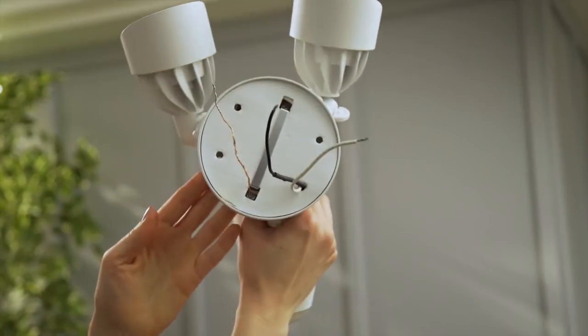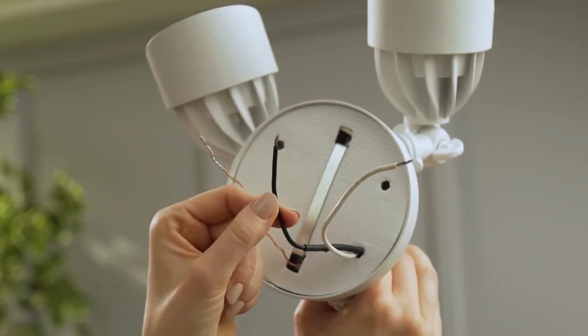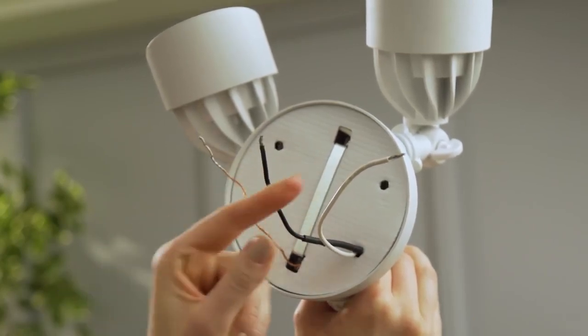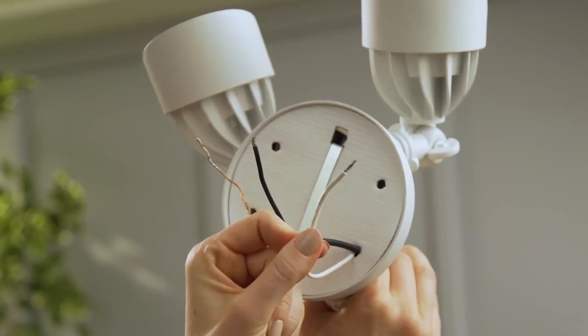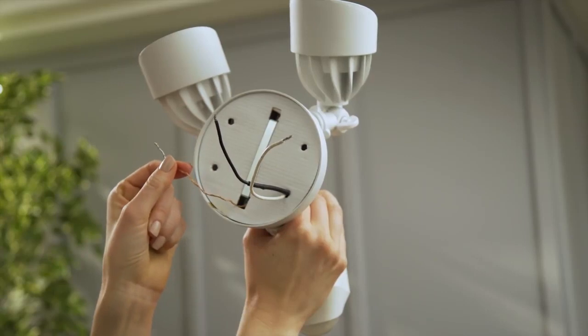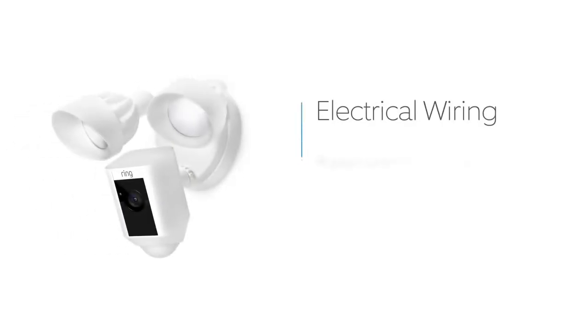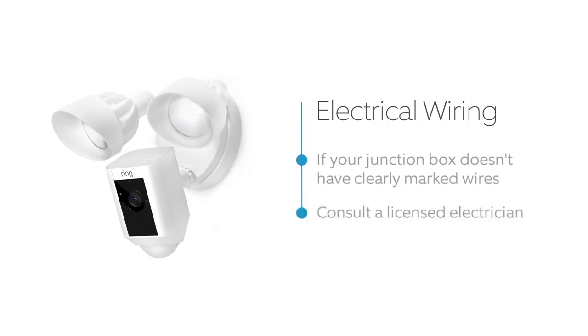On the back of your Floodlight Cam are three wires. This black wire is the hot wire and will connect to the black wire in your junction box. The white wire is neutral and will connect to your neutral or white wires. This copper wire is the ground. If your junction box doesn't have clearly colored black and white wires, consult with a licensed electrician.